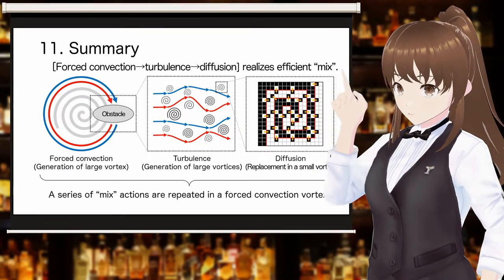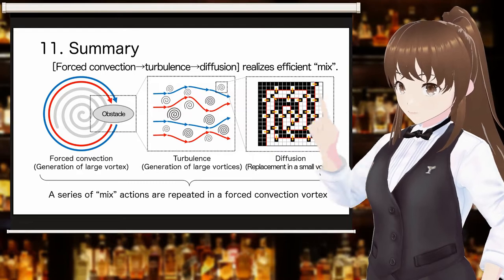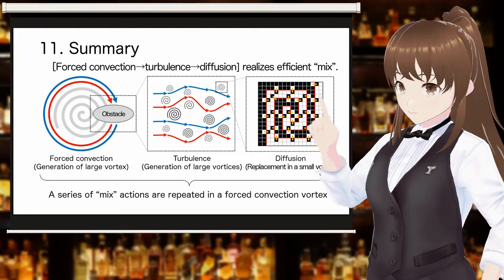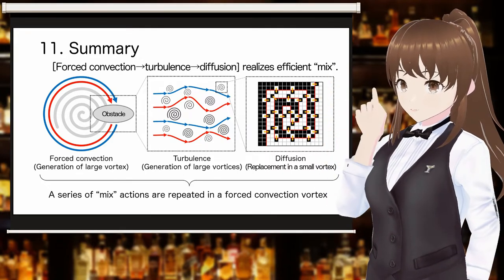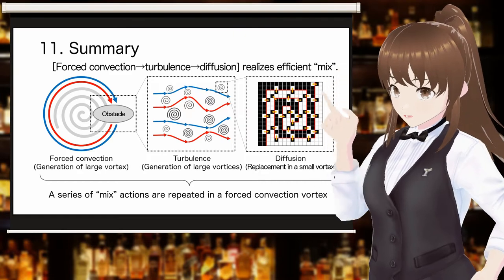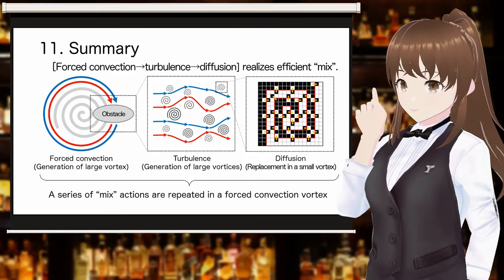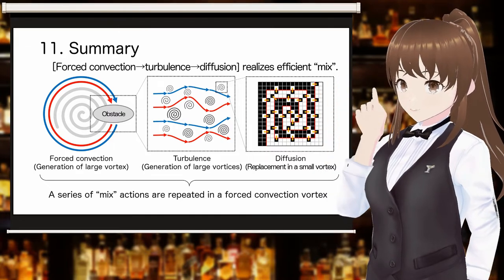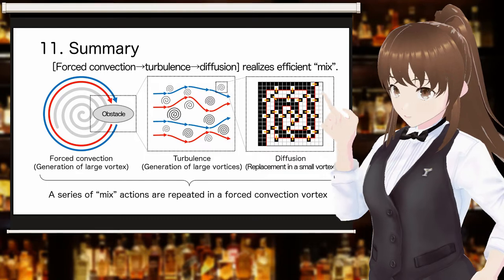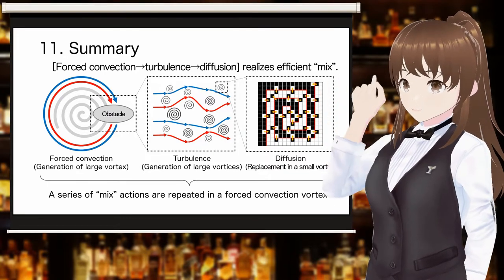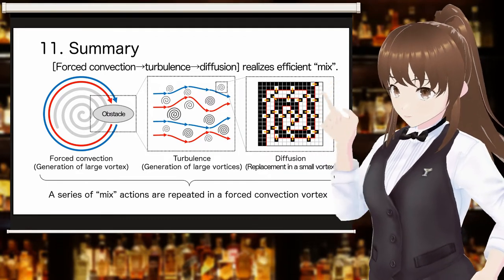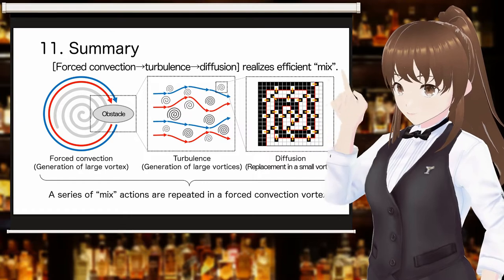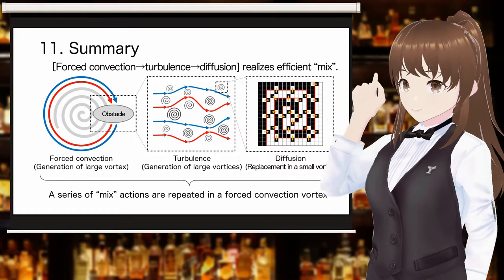In this video, we explained the principle of mixing. It explained that mixing requires forced convection to stretch the boundary surfaces of different elements, the generation of turbulence that turns the flow of forced convection into easily mixable conditions, and the action of diffusion — the replacement of elements in vortices of various sizes in the turbulence. As a large vortex of forced convection, this series of actions can be repeated to achieve efficient mix. In shaking, the ice inside the shaker and the strainer of a three-piece shaker are the obstacles that generate turbulence.